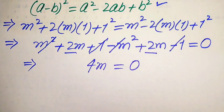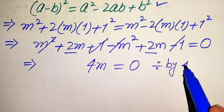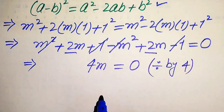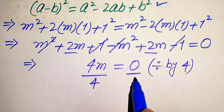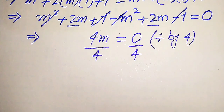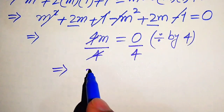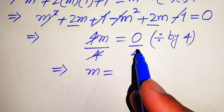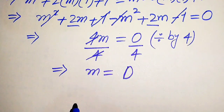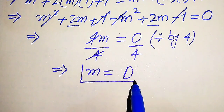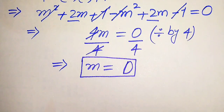Our target is to find the value of m, so we divide both sides by 4. Four divided by four cancels, and zero divided by four is zero, giving us m = 0.